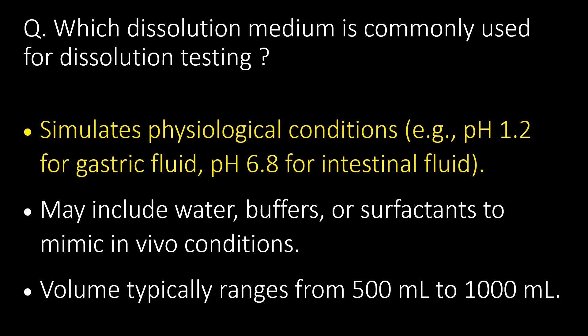Which dissolution medium is commonly used for dissolution testing? The dissolution medium simulates physiological conditions — for example, pH 1.2 for gastric fluid and pH 6.8 for intestinal fluid. It may include water, buffers, or surfactants to mimic in vivo conditions, and the volume typically ranges from 500 ml to 1000 ml.